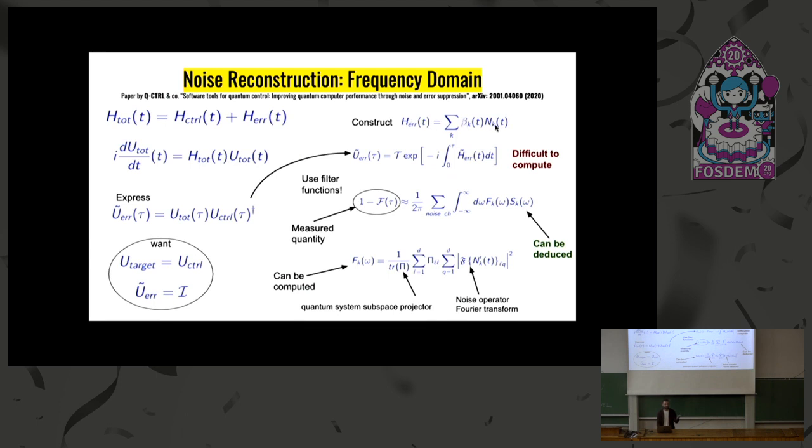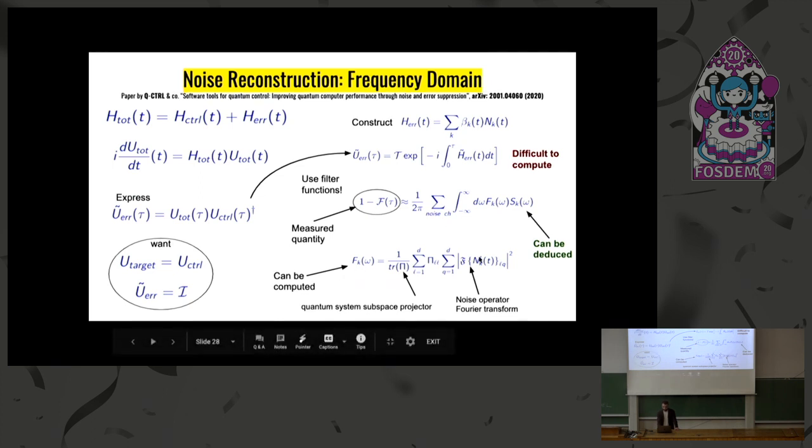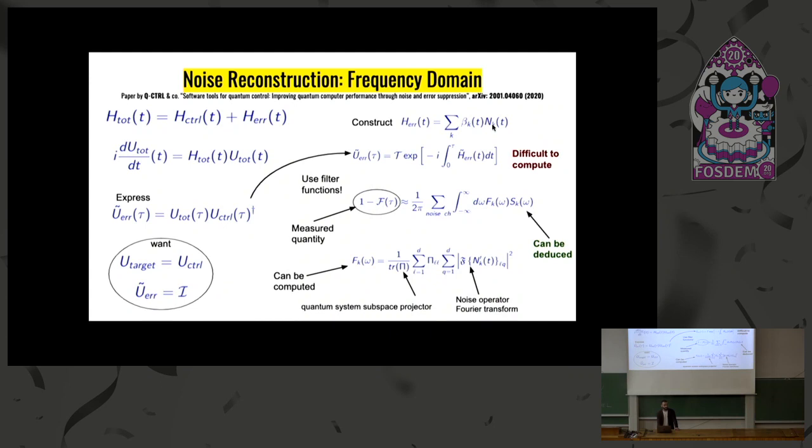And we want to do something that this error term doesn't affect our operations. So it can be expressed this U tilde operator in terms of this total and control dagger which is the inverse of the unitary. And we want that our target unitary or the target gate be this control which is governed by this Hamiltonian and the error gate will be just identity that says does nothing. And this tilde means that it's in the toggling frame which is you original U and U control U control dagger from both sides.